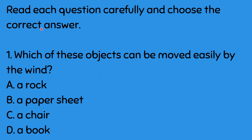For the evaluation, read each question carefully and choose the correct answer. Number 1: Which of these objects can be moved easily by the wind? A. A rock, B. A paper sheet, C. A chair, D. A book. What is your answer? The answer is letter B, a paper sheet.